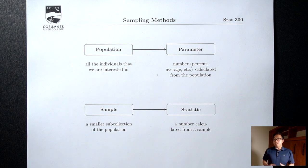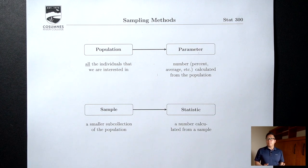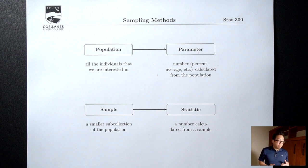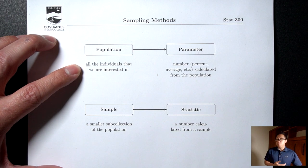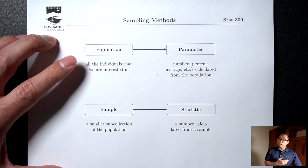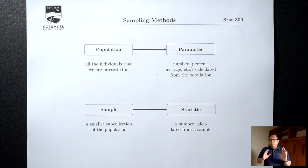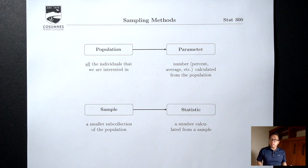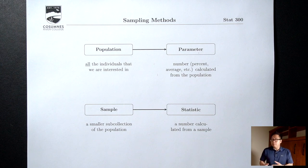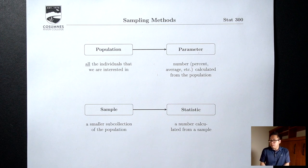Last time we talked about the different types of data. Most of the time we're collecting data because we want to learn more about a certain population. By population I mean all the individuals that we're interested in — keyword here being 'all.' It doesn't have to be everybody in the entire world. The population I'm interested in may be all CRC students, all people in Sacramento, or if I'm a fertilizer company, all lemon trees.